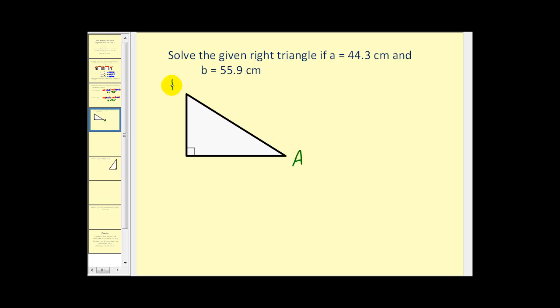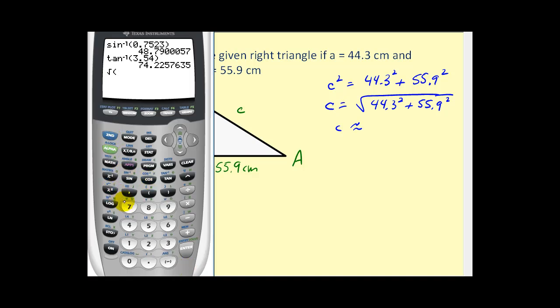So let's call this angle A, angle B, angle C. So side A across from angle A, 44.3 centimeters, B 55.9 centimeters. We need to find the hypotenuse and the interior angles of this triangle. We can find the hypotenuse by using the Pythagorean theorem. C squared equals A squared plus B squared. So C will equal the square root of this. Let's go ahead and go to our calculator. And C is approximately 71.3 centimeters.